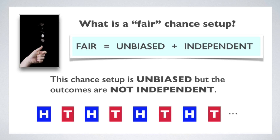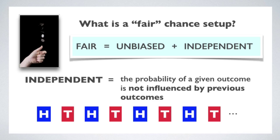But clearly, these coin tosses are not independent. Remember what independence means: the outcomes of a chance setup are independent if the probability of a given outcome is not influenced by the history of previous outcomes. In other words, given the previous outcome, I should not be able to predict the next outcome any better than chance. But of course I can with this set. If it's heads, then I know that the next one will be tails, and vice versa.